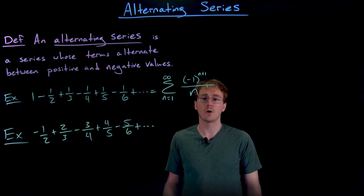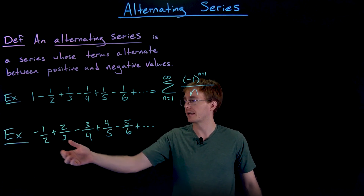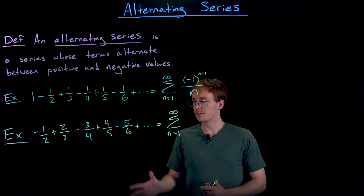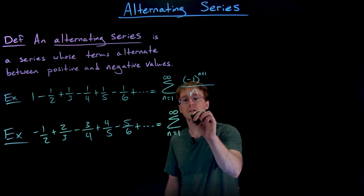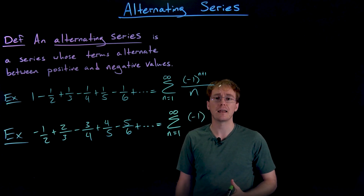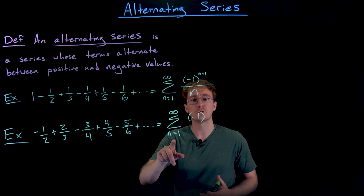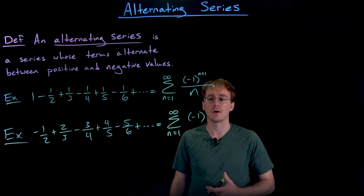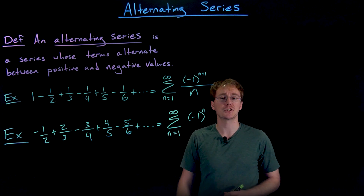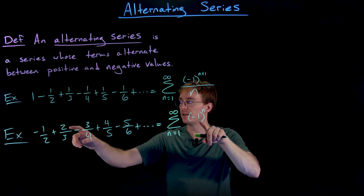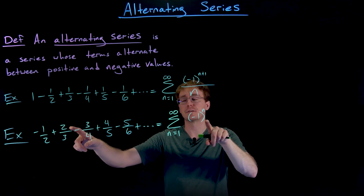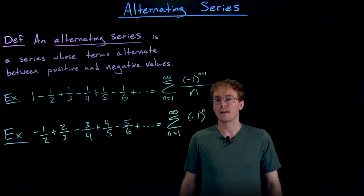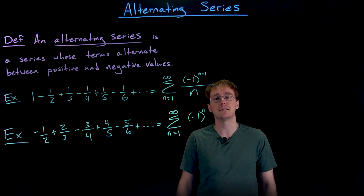Here is a second example of an alternating series. In expanded form it looks like negative one-half plus two-thirds minus three-fourths plus four-fifths minus five-sixths, and so on. We can use a factor of negative one to capture the alternation, raising it to the power of n so that when n equals one we get negative one, when n equals two we get positive one, and so on — switching back and forth. That piece, negative one to the power of n, is capturing the alternation happening between the terms.